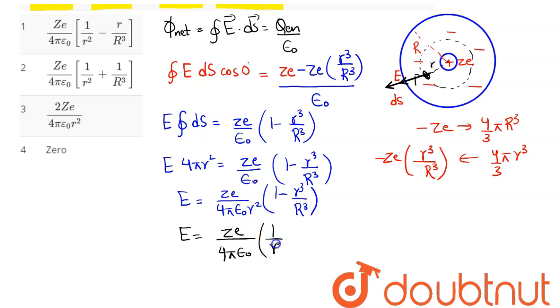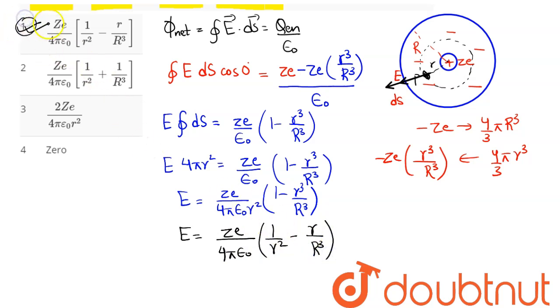This simplifies as (1/r²) minus (r/R³). Comparing with the four options, option number 1 is the correct answer.